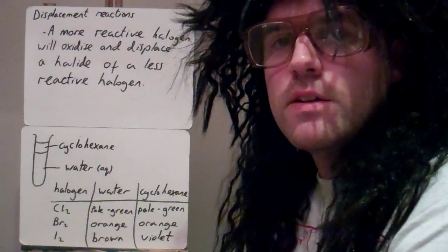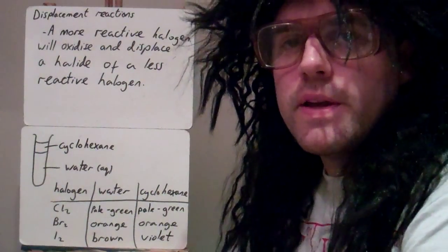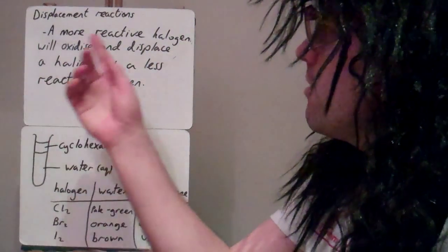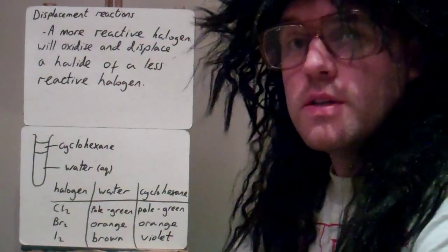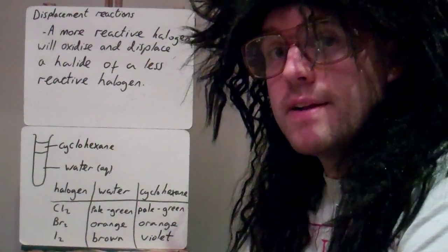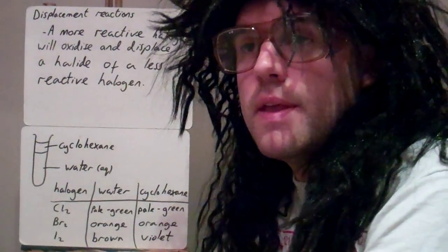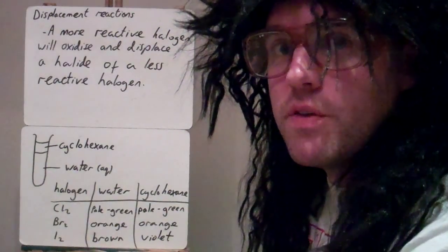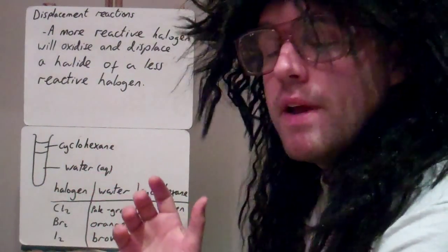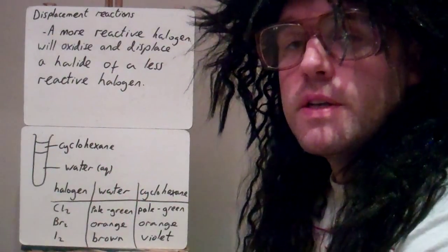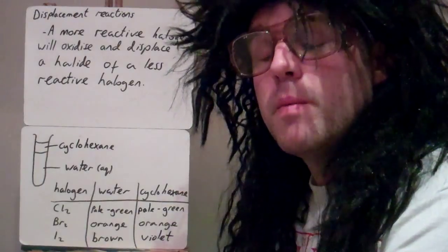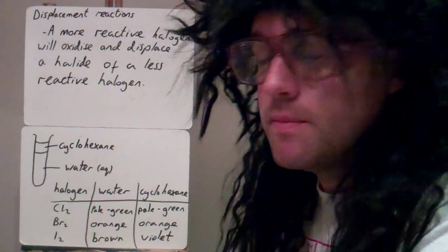We can compare the reactivity of the halogens by looking at displacement reactions that take place in solution. A more reactive halogen would oxidise and displace a halide ion of a less reactive halogen. The halogens are more reactive as you go up group 7, so fluorine would be the most reactive. In particular, we look at chlorine, bromine, and iodine — we expect chlorine to be the most reactive, then bromine, then iodine.